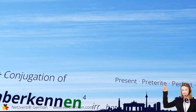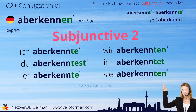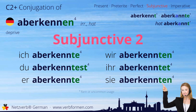Now we move on to the subjunctive 2. Ich aberkennete, du aberkennest, er aberkennete, wir aberkennen, ihr aberkennet, sie aberkennen.